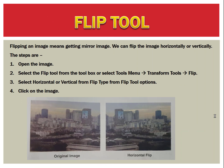Next is the flip tool. Flipping an image means getting a mirror image. We can flip the image horizontally or vertically. The steps are: open the image, select the flip tool from the toolbox, or go to the Tools menu, then Transform Tools, and select the Flip option. Select horizontal or vertical from the flip type in the flip tool options, then click on the image.